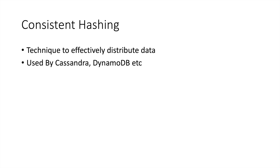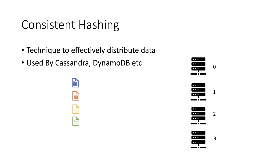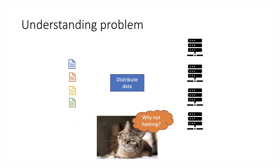Let us understand this with a diagram. You have a lot of data and you have a lot of servers, and the data size is so big that you cannot store it on a single machine. So you want to distribute it over a lot of servers. Consistent hashing helps you do that, however it is not that straightforward.